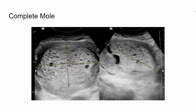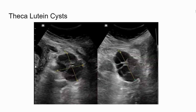You can see here some complete molar tissue — it's obviously abnormal, very vesicular, and had high colour flow. Also associated with these are bilateral theca lutein cysts on the ovaries.